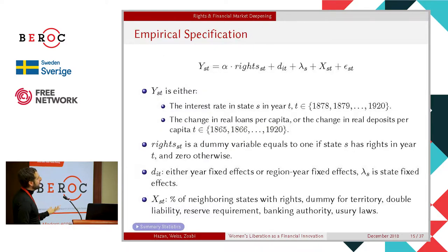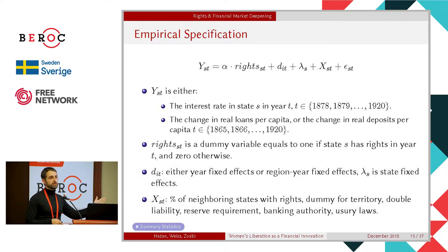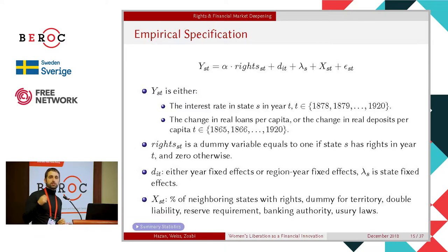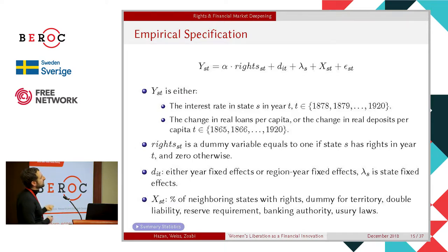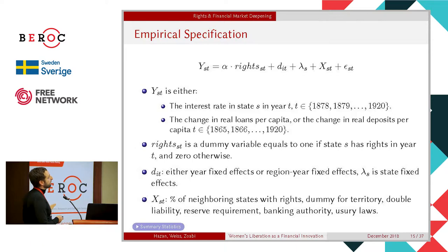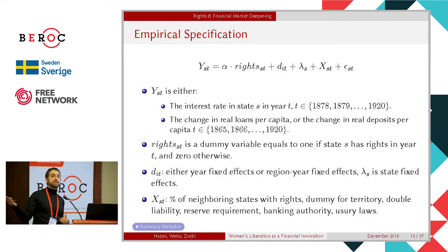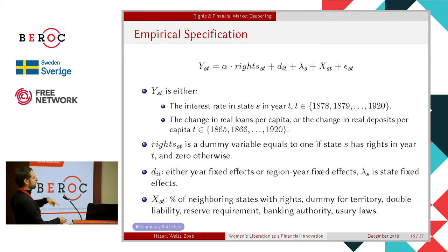Now I'll formalize this in a regression approach. The dependent variable Y_ST is either the interest rate in state S in year T — this interest rate series goes back to 1878 — or going back to 1865, we have data on deposits and loans in national banks, those regulated by the Office of the Comptroller of the Currency. We look at deposits and loans going back to right after the Civil War, and examine how these interest rates, deposits, and loans are affected by rights. We control for year fixed effects or region-year fixed effects, and state fixed effects. You might be worried that a lot of things are changing at the same time — it's not just women's rights.